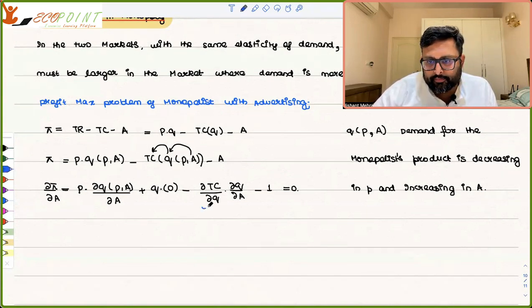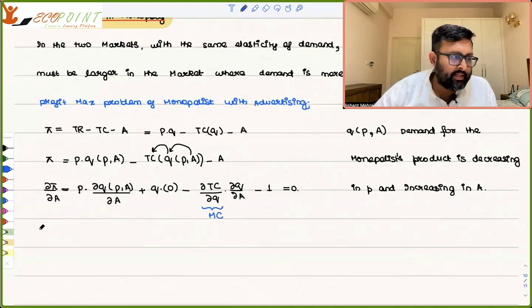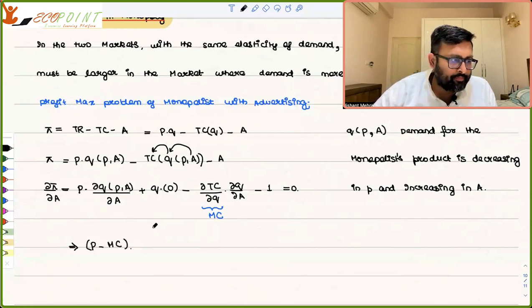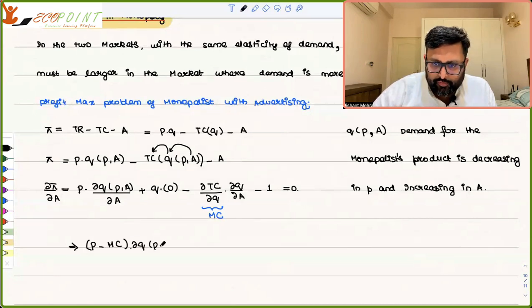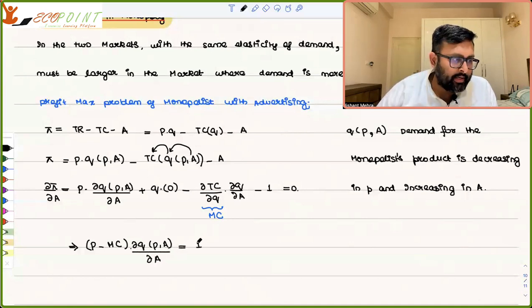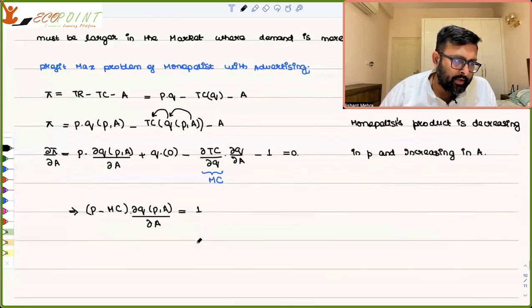∂TC/∂Q is the marginal cost MC. Taking ∂Q/∂A as a common factor gives: (P − MC)·(∂Q/∂A) = 1.